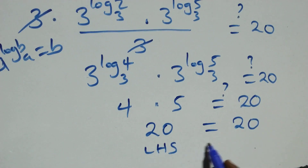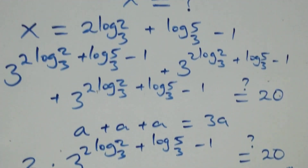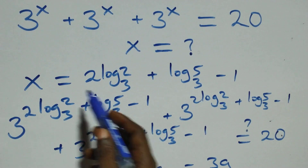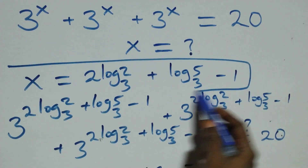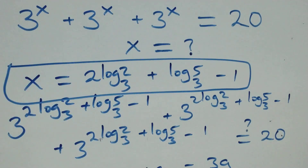Left hand side equals right hand side, and therefore we conclude that x equals 2 log 2 base 3 plus log 5 base 3 minus 1 satisfies the given problem. Thank you for watching. Don't forget to subscribe for more videos, turn the notification bell, share this video, and put your comments. See you in the next class, bye for now.